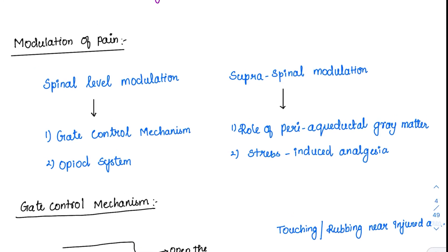How can pain be modulated? Not from external drugs — our body has its own mechanism to modulate pain, and even external drugs are devised based on these mechanisms. We have two levels of pain modulation: one that happens at the spinal cord level, and a second that happens at the supra-spinal level.